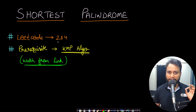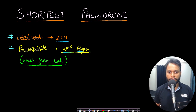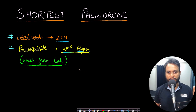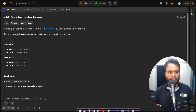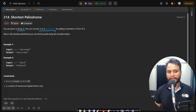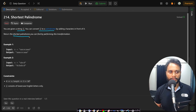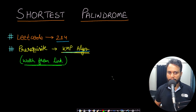Hello guys, welcome back to TechDose. In this video we will see the Shortest Palindrome problem, which is LeetCode number 214. A prerequisite before solving this problem is to watch my video on the KMP algorithm — the link will be in the i-button and also in the description below. Now let's read the problem statement. You are given a string s and you can convert s to a palindrome by adding characters in front of it, and we need to return the shortest palindrome.